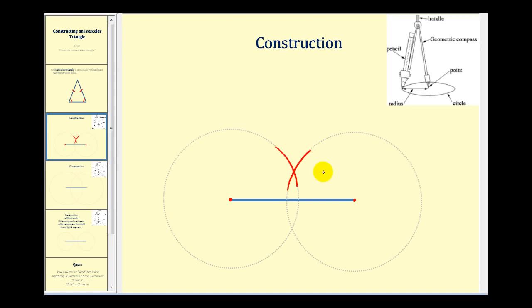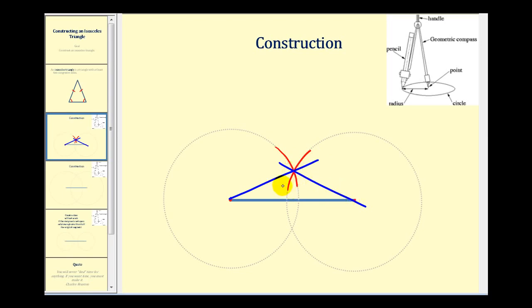Using our straight edge, we draw a segment from one endpoint to the intersection of the arcs, and another segment from the other endpoint to that same intersection, completing the isosceles triangle. The two congruent sides each equal the radius of the two congruent circles, guaranteeing they are congruent — and therefore we have an isosceles triangle.